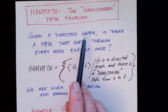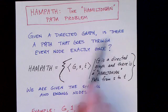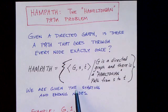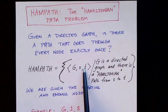Given a directed graph, the question is, is there a path that goes through every node exactly once? And in particular, like in the previous path problem, we're given the starting node and the ending node, S and T.